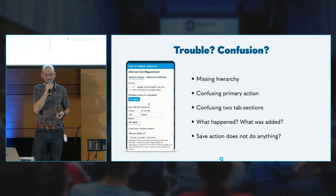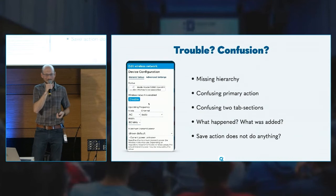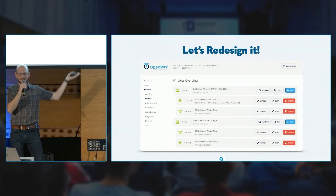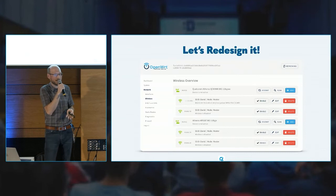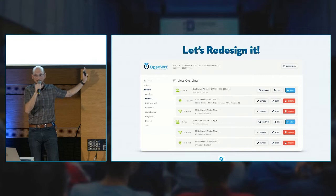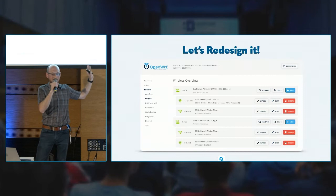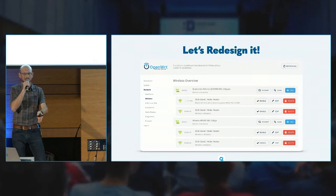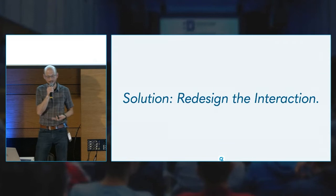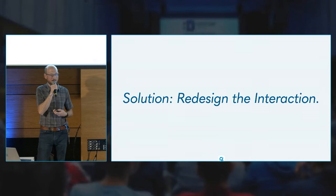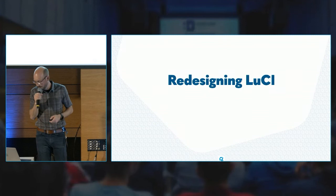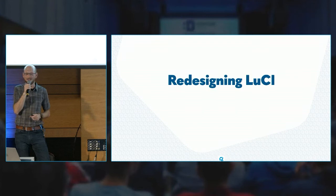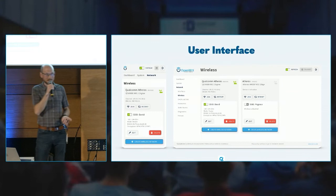So let's redesign it — that's what we do when something doesn't work. Is this better? Someone says yes. But actually it's not. It may look different, but the interaction is basically the same. We didn't change anything. We did the same thing the LuCI team did when they changed the Bootstrap theme to the 2020 theme — nothing changed functionally. The solution is to redesign the whole interaction, not just the page, the colors, or the buttons. After 12 minutes of talking, I've finally got to the point of this talk.